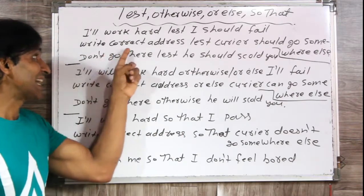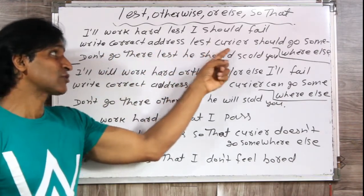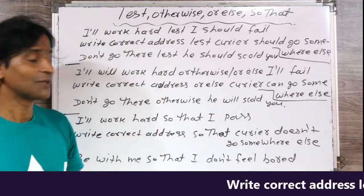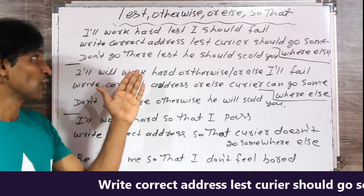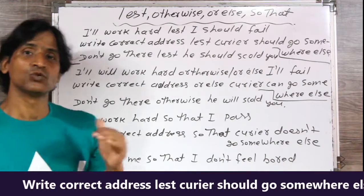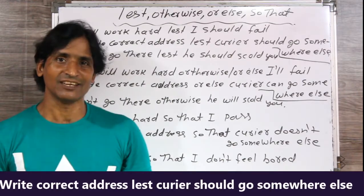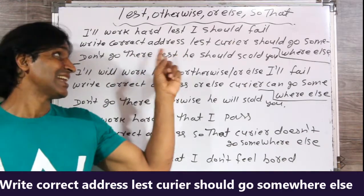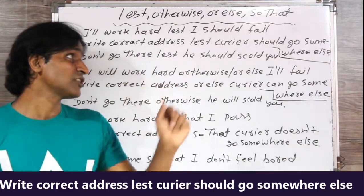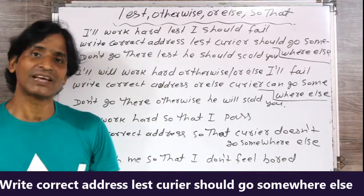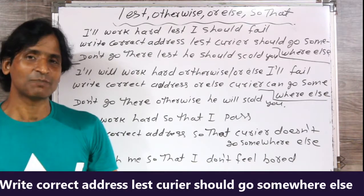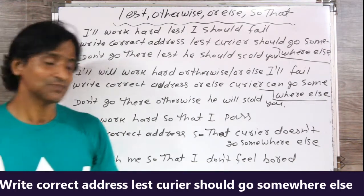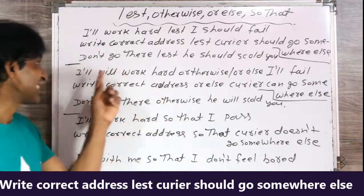The second sentence: 'Write correct address lest courier should go somewhere else.' Meaning: सही-सही पता लिखो, कहीं ऐसा न हो कि courier कहीं और चला जाए. Write correct address lest courier should go somewhere else.